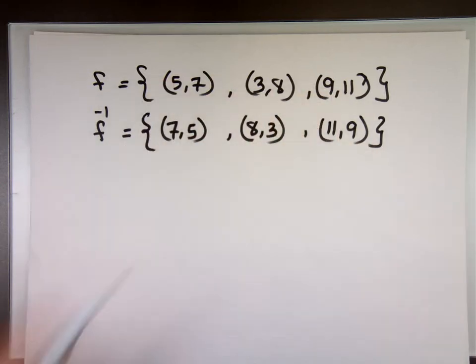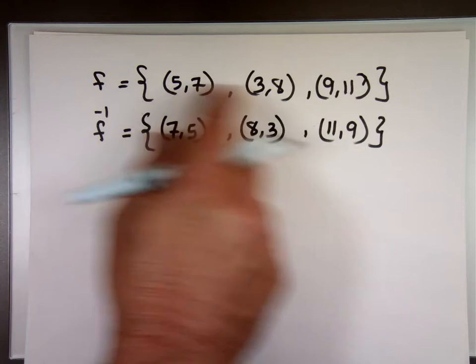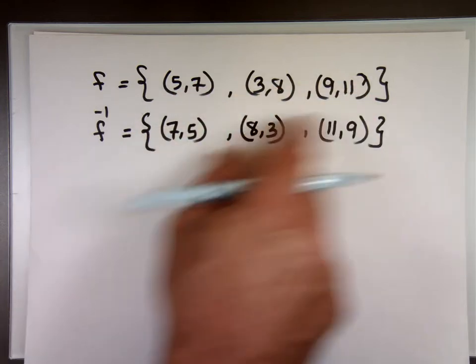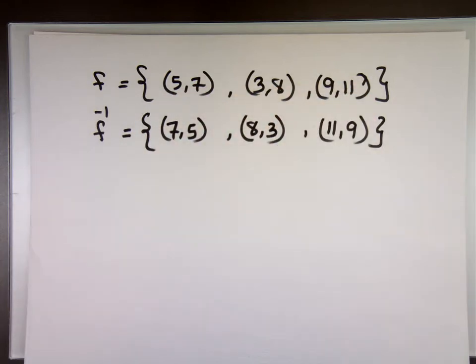Because the domain here becomes the range, the domain, the first set of values. The range here becomes the domain. They undo each other. They cancel each other out.